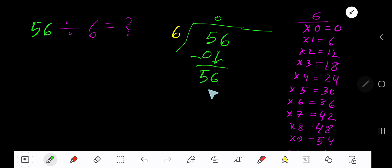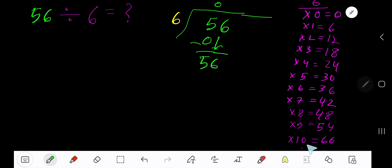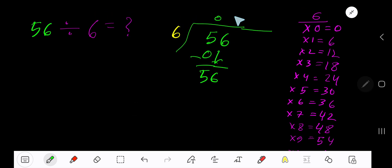6 goes into 56 how many times? 10 times is 60 which is greater, so 9 times. 9 times 6 is 54. We subtract and you are getting 2. So our answer should be 9 remainder 2.